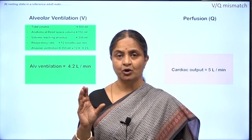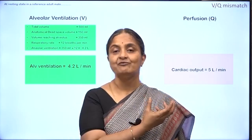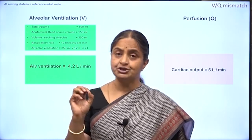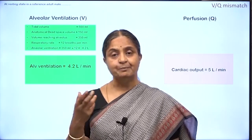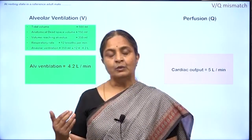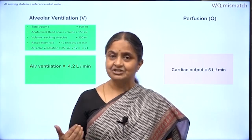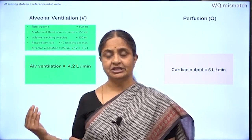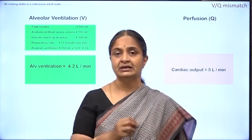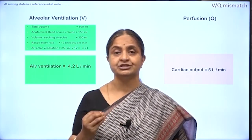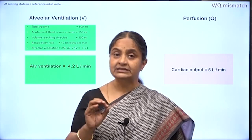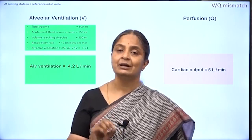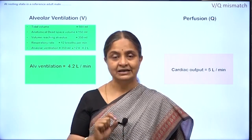If you have a certain volume of ventilation it is ideal to have the same volume for perfusion, or if the V by Q — the ventilation perfusion ratio — is 1, that is where the best oxygen transfer occurs. Even if total ventilation is normal and total perfusion is normal, there can be regional mismatches of ventilation and perfusion, and that amounts to diffusion impairment. It affects oxygen transfer alone and not carbon dioxide transfer. That is the message in this lecture.